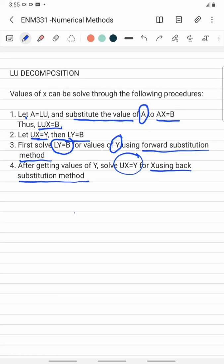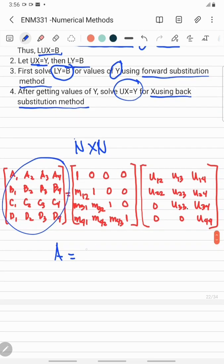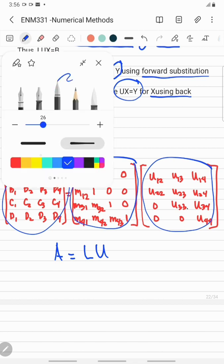We can also express the concept of LU decomposition by this matrix, but this matrix is only applicable to a dimension of N by N. This is our matrix A for the coefficient matrix, which equals L times U. This is our lower triangular matrix, and this is our upper triangular matrix.